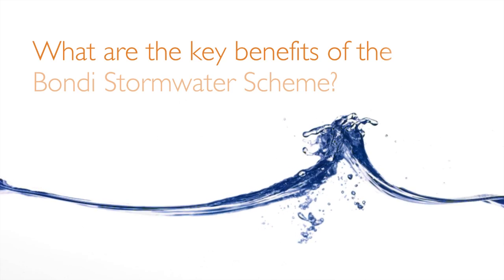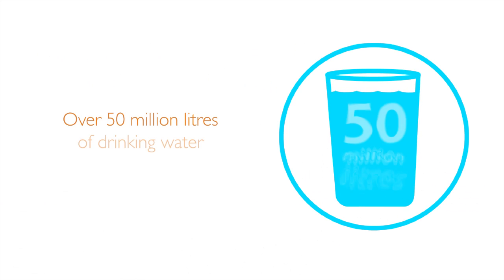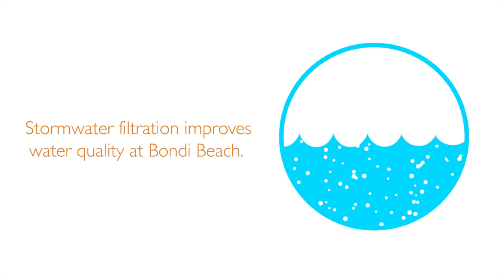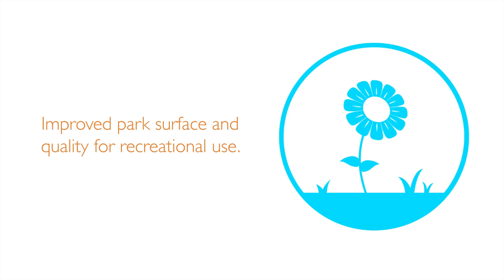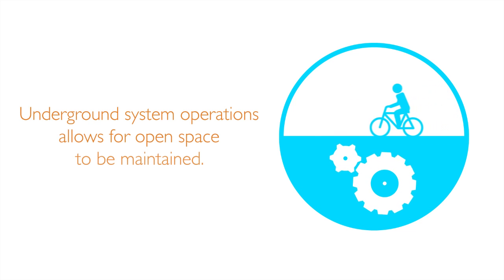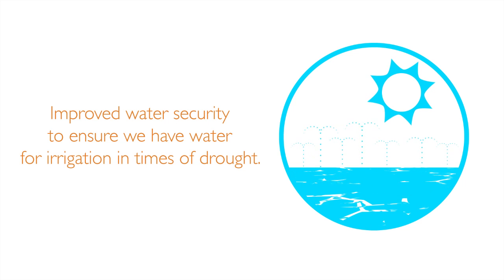What are the key benefits of the Bondi stormwater scheme? Over 50 million litres of drinking water is saved each year. Stormwater filtration improves water quality at Bondi Beach. Improved park surface and quality for recreational use. Underground system operation allows for open space to be maintained. Improved water security to ensure we have water for irrigation in times of drought.